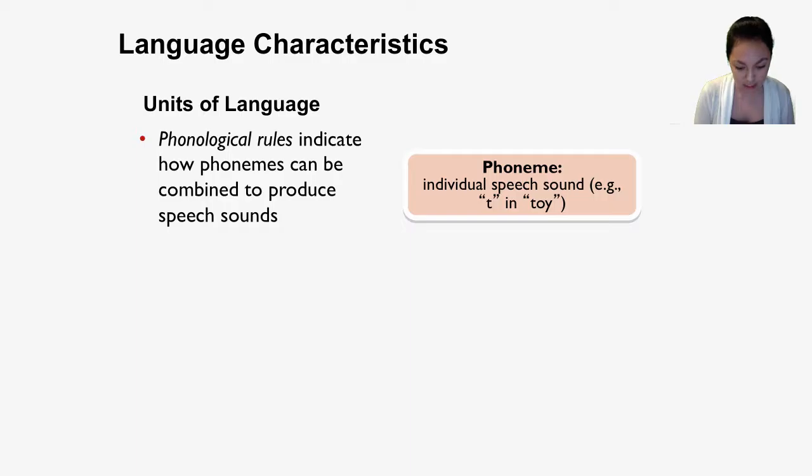Each language has a set of phonemes that are governed by phonological rules. And these rules indicate how phonemes can be combined to produce speech sounds. For example, in English, the P and B sounds are two different phonemes. Whereas in the Hindi language, P and B sounds are actually the same phoneme, so there would not be a difference. So those who are native Hindi speakers have trouble differentiating between these two sounds. Whereas native English speakers can pretty easily differentiate between these two phonemes.